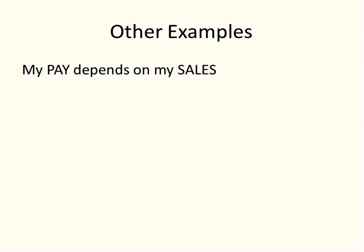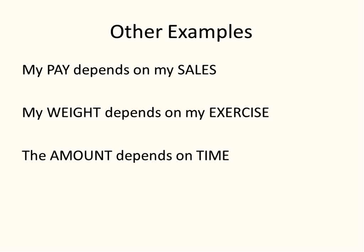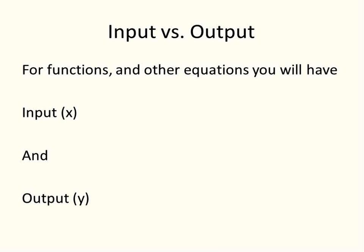Now, I want to show a couple other examples. My pay depends on my sales. Let's say you work in marketing or sales. My weight depends on my exercise. If my exercise increases, hopefully my weight will decrease. The amount depends on time. The distance depends on speed. These are just some examples. They're kind of vague examples, but just examples that help you see one thing depends on the other. When these ones change, it forces these other ones to either increase or decrease.